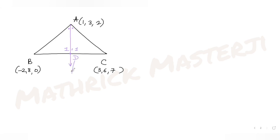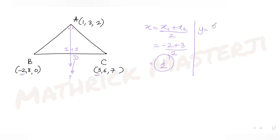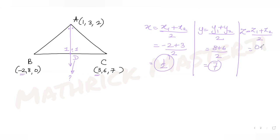Since D divides BC in the ratio 1:1, I can apply the midpoint rule to find the coordinates of D. The x-coordinate of D is (-2 + 3)/2 = 1/2. The y-coordinate is (8 + 6)/2 = 7. The z-coordinate is (0 + 7)/2 = 7/2. So the coordinates of D are (1/2, 7, 7/2).